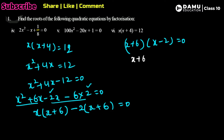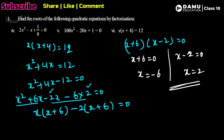Either x + 6 = 0 or x - 2 = 0. So x = -6 or x = 2. These are the two roots for the quadratic equation x² + 4x - 12 = 0.